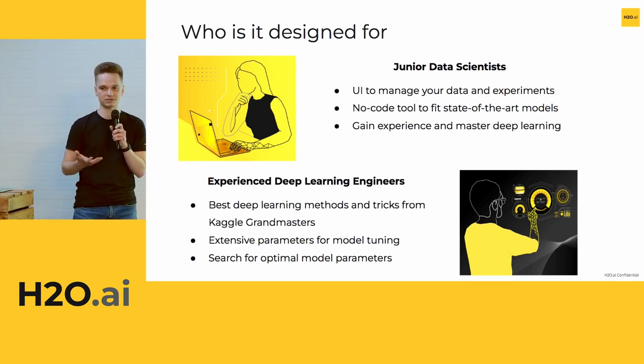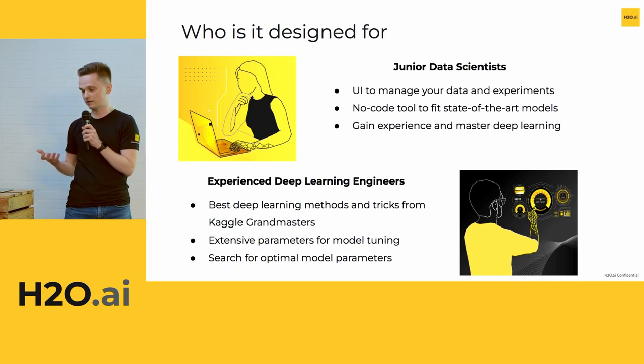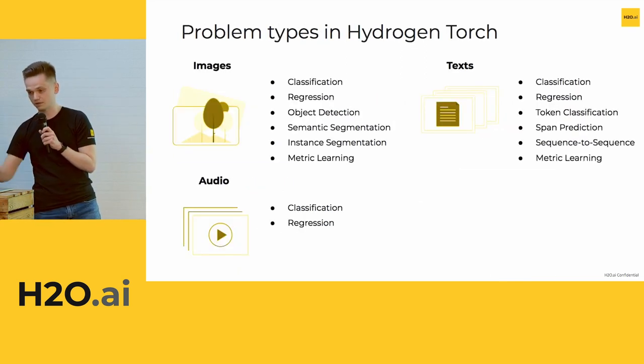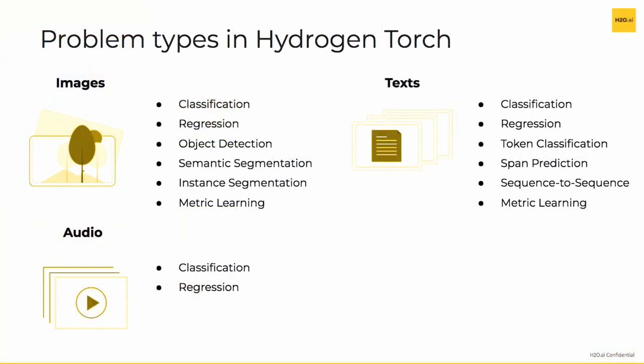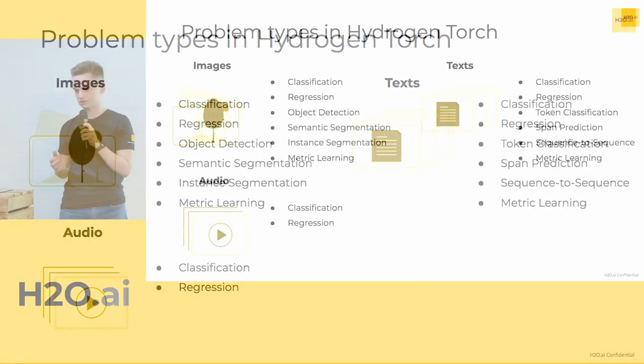It is much faster than building pipelines with code. In Hydrogen Torch we support a dozen problem types covering three data types: images, text, and audio. We are tailored towards unstructured data. It starts from simple classification and regression for all these data types, towards specific use cases like object detection or segmentation for images, or text classification, sequence to sequence, or metric learning.